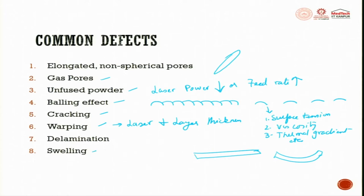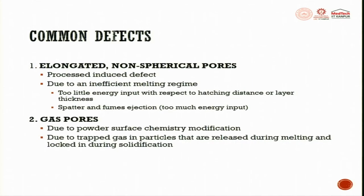We will also look at swelling. These are the most common 8 defects - normally speaking these are the 8 dominant defects in metal additive manufactured parts. The elongation and non-spherical pores occur because of a process induced defect due to an inefficient melting regime - too little energy input with respect to hatching distance or layer thickness.